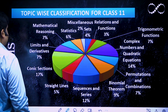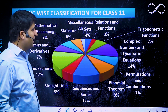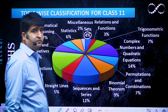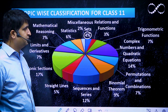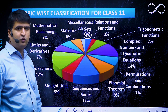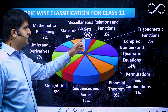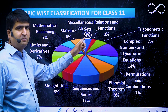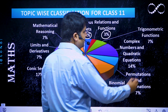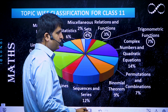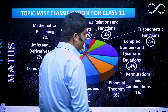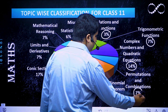The topic-wise classification for Class 11: Sets comprises 4% of the total Class 11 questions. Relations and Functions is 3%, Trigonometric Functions 7%, Complex Numbers and Quadratic Equations — very frequently asked in JEE — comprises 14%, and Permutation and Combination 7%.